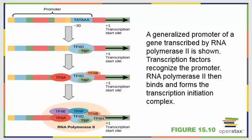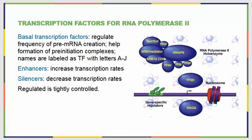A generalized promoter of a gene transcribed by RNA polymerase 2 is shown here. Transcription factors recognize the promoter, then RNA Pol 2 binds and forms a transcription initiation complex. Once binding occurs, certain sections might leave and others might be added, but the whole unit moves synchronously down the DNA strand. There are some additional transcription factors that attach to RNA polymerase 2. One group is the basal transcription factors, which help regulate the frequency of pre-mRNA creation so we don't have extra RNAs floating around.